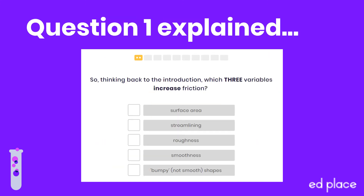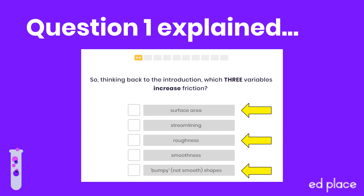So this first question is simply checking that you've taken on board the key aspects of what increases the force of friction between two surfaces. If the surfaces rubbing against each other are rough, like your trainers on the path, then there's lots of friction. Similarly, if they're bumpy, like the tread on the sole of your trainers, more friction. Finally, bigger areas provide a larger surface to come into contact with - for example, tank tracks have a much bigger surface area touching the ground than tyres would have, so that means lots more friction. The other two answers - streamlining and smoothness - are to do with reducing friction rather than increasing it.